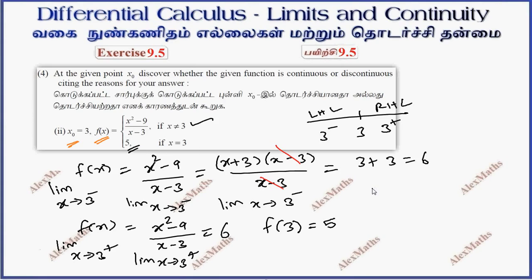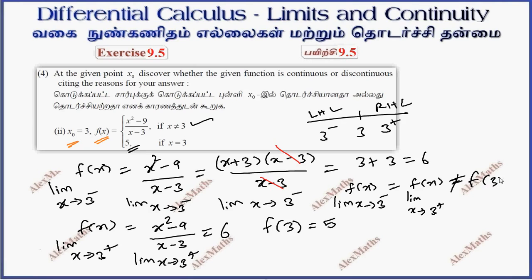So the left-hand limit equals the right-hand limit, and the function value exists, but they are not equal. That is, limit as x approaches 3 minus equals limit as x approaches 3 plus, but f(x0) is not equal to f(3). Therefore, it is not continuous at x equal to 3. The function is not continuous.